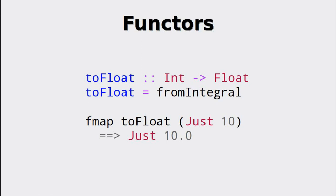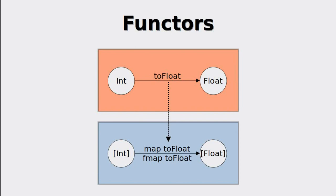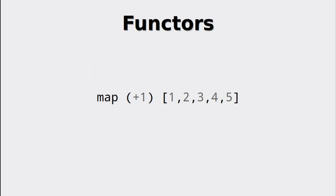Let us look at the list functor next, specifically the definition. It should not surprise us that fmap for lists is nothing but the map function. Going back to our toFloat example, fmap as well as map are fine for the conversion — which should make us think: is the application of map always a functor application? The answer is yes, indeed, which is quite amazing if you think about it. Every time we have used a simple mapping on lists, we have worked with a functor without really knowing it.